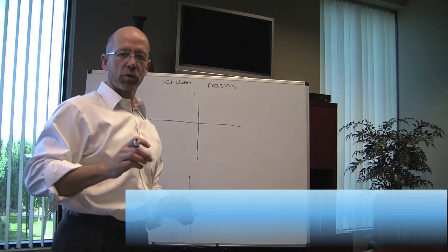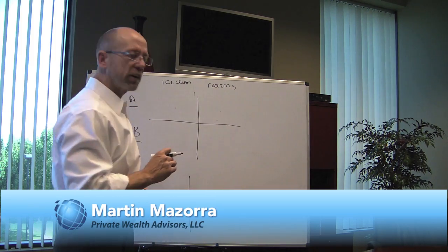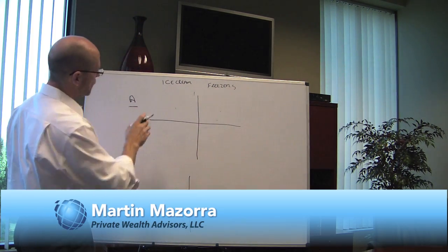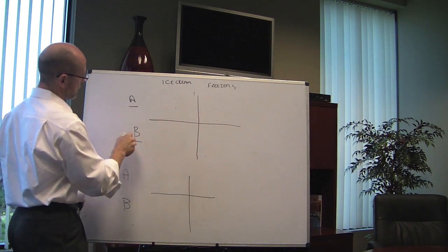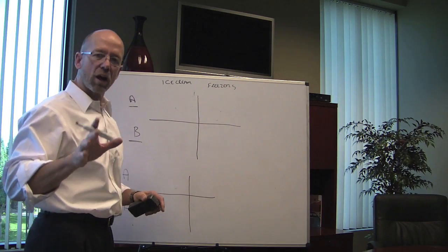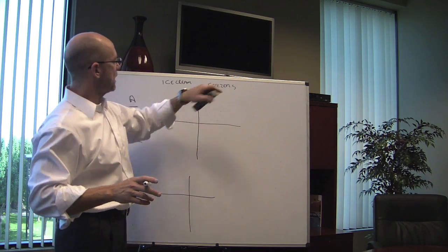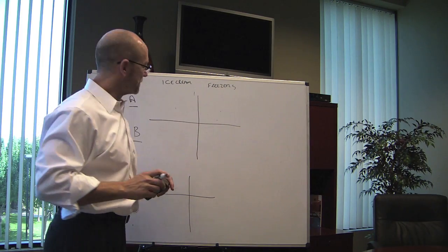In today's lesson on international trade, we're going to talk about the theory of comparative advantage. We have a hypothetical world where only two countries exist, two countries creatively named A and B. In these two countries, there are only two items, two products, ice cream and freezers. Strange world, but a cool world, pardon the pun.